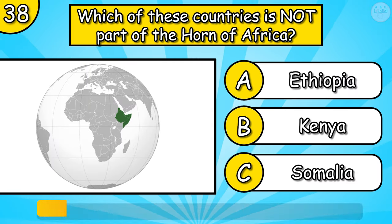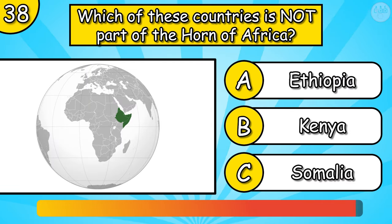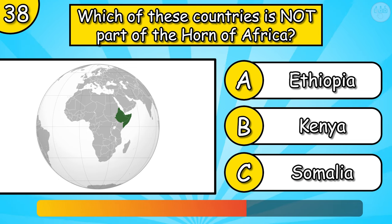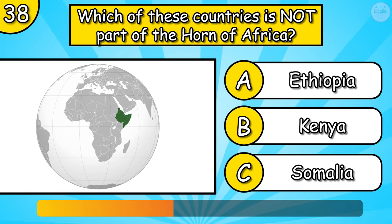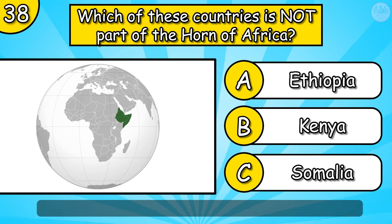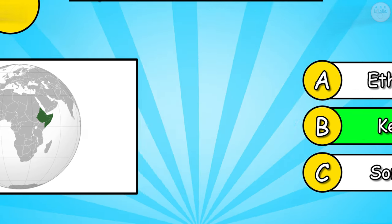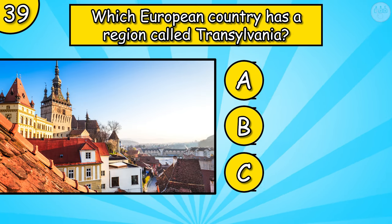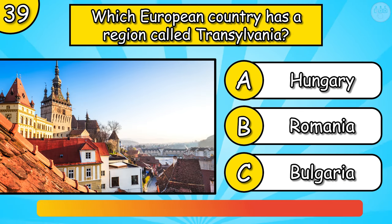Which of these countries is not part of the Horn of Africa? Which European country has a region called Transylvania?